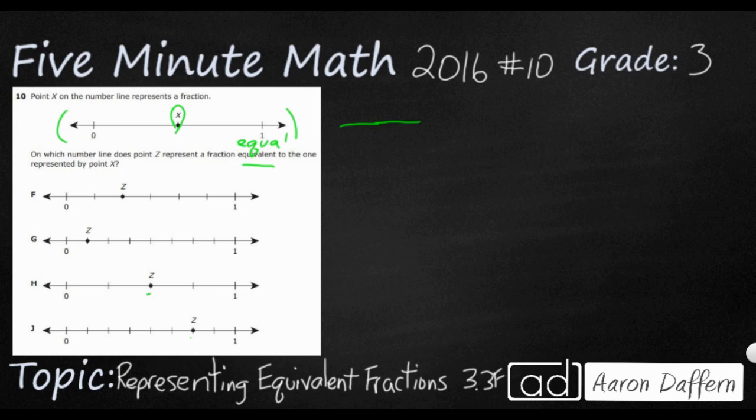So when we're naming a fraction, we need two numbers. We need the numerator, that's going to be our top number, and the denominator, that's going to be our bottom number. Now, the denominator is always going to be the total.